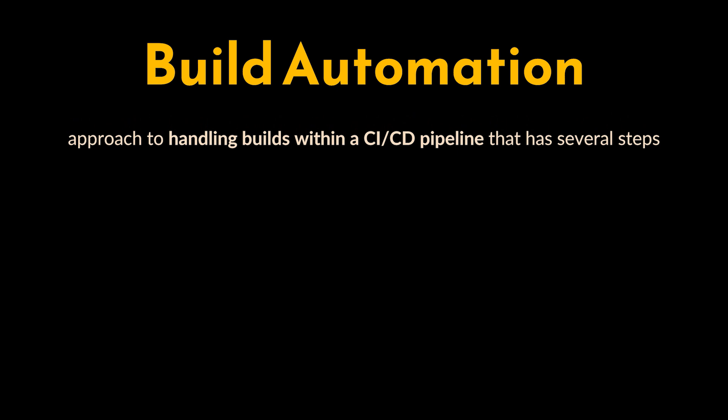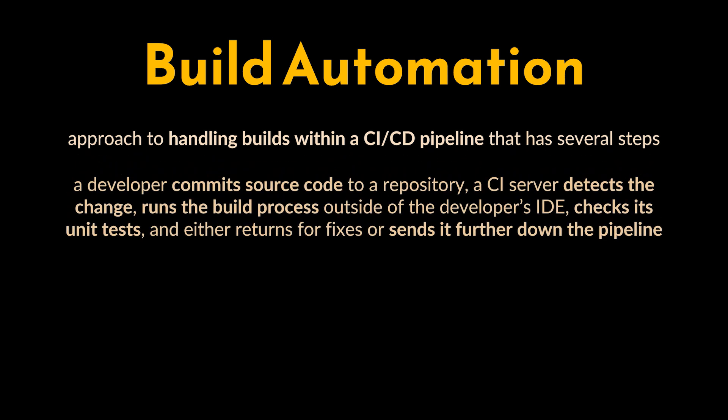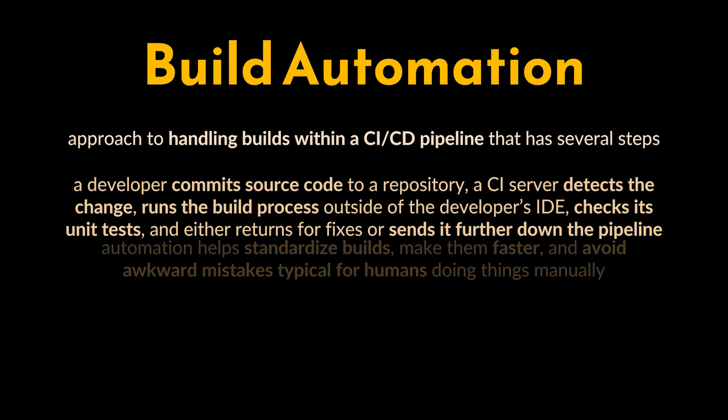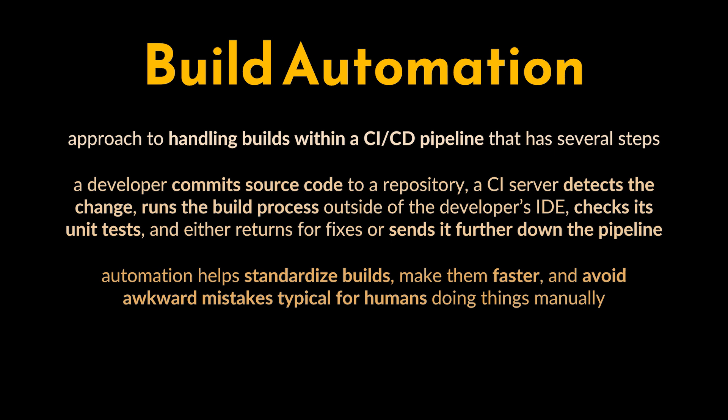The CI/CD pipeline has several steps: a developer commits source code to a repository, a CI server detects the change, runs the build process outside of the developer's IDE on a dedicated cloud or in-house machine, then checks its unit tests and either returns it for fixes or sends it further down the pipeline. Automation helps standardize builds, make them faster, and avoid mistakes typical of humans doing things manually.